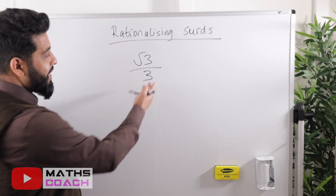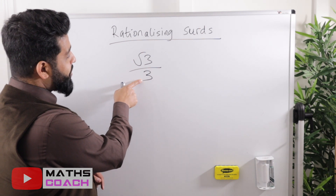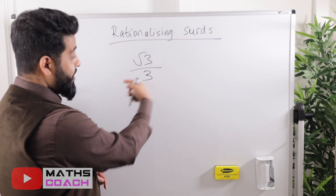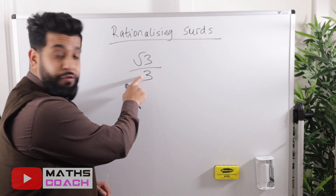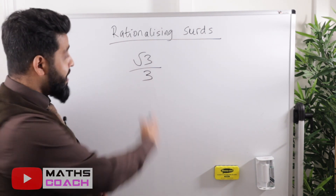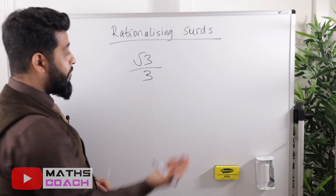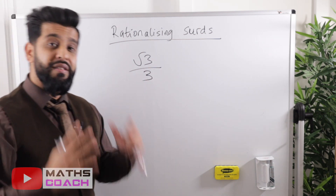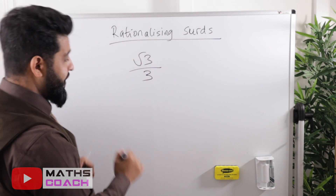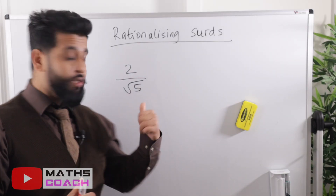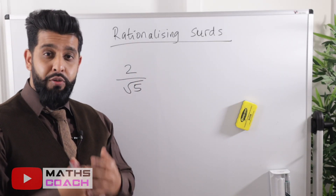Have we finished rationalizing 1/√3? Yes — there is no longer a square root in the denominator. Previously we had √3 on the bottom; now we just have 3. So √3/3 is the final answer. Now try this one yourself: 2/√5. Pause the video and come back to it.